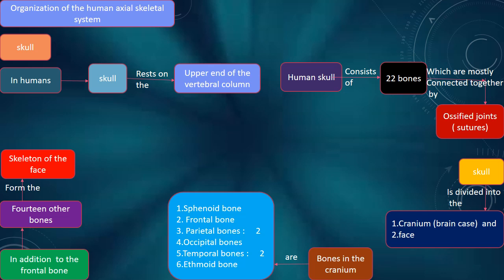The skull is divided into the cranium (the brain case) and the face. The bones in the cranium are: sphenoid bone, frontal bone, two parietal bones, occipital bones, two temporal bones, and ethmoid bone.